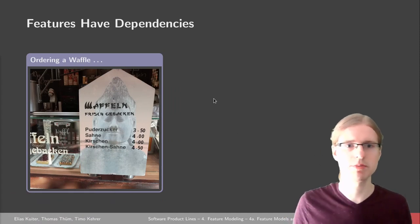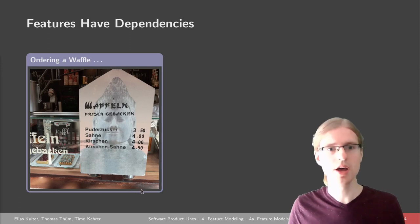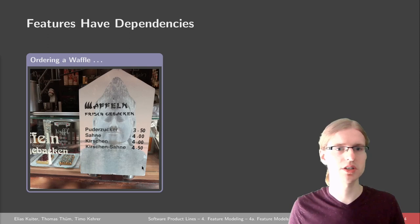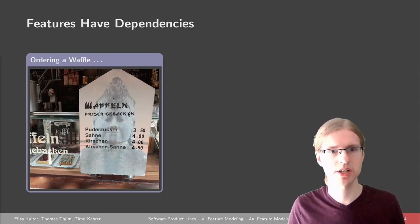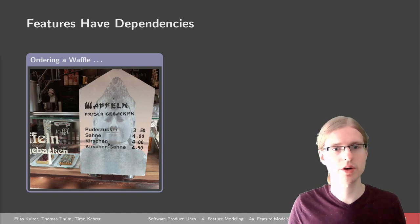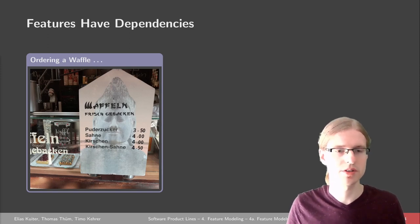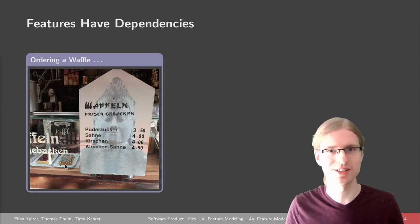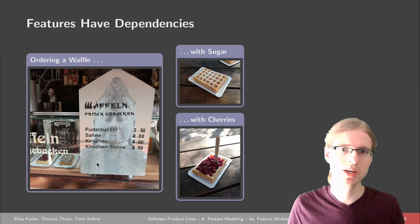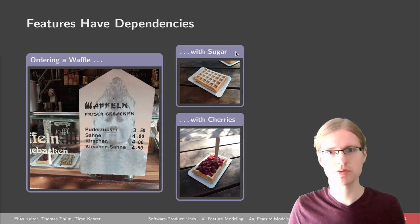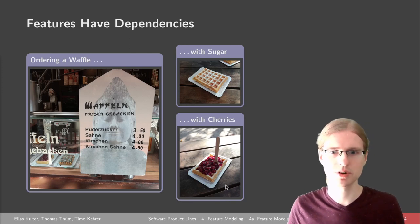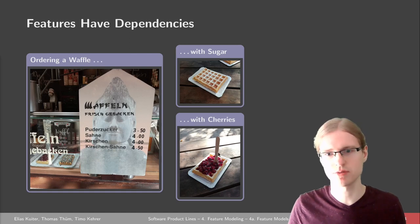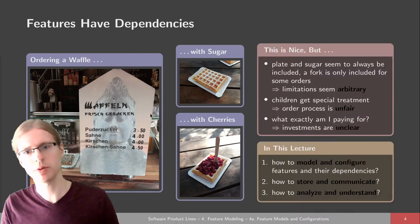Another real-life example of feature dependencies, taken from a visit to the zoo, is this waffle product line. There are different configurations: you can get a waffle with sugar for €3.50, one with cream, one with cherries, and one with cherries and cream. There is also a children's waffle with Nutella and colored crumbs. There are some example configurations on the counter, and when you order cherries, you also get a plate and a fork.